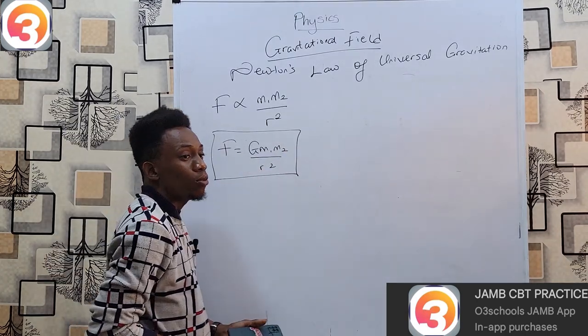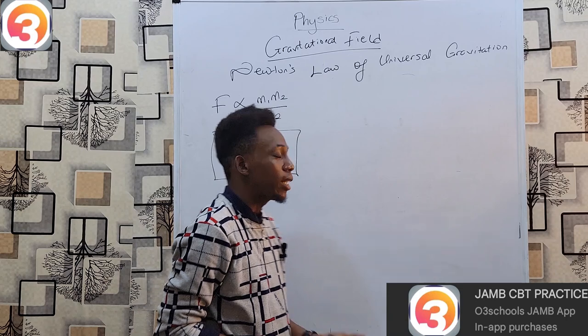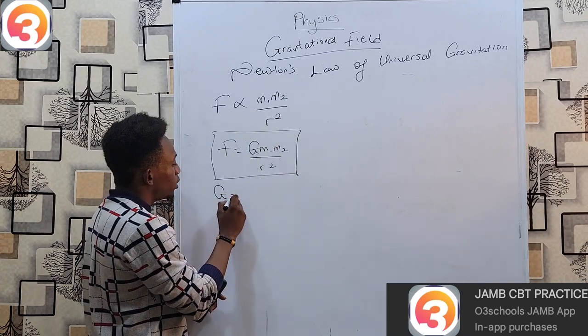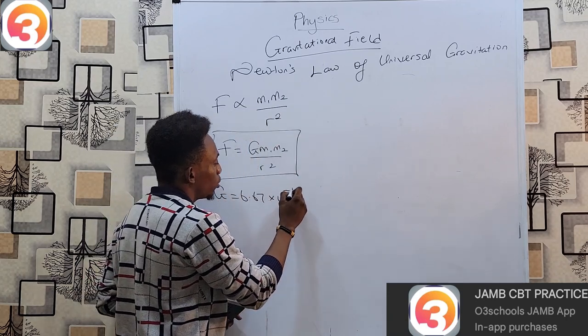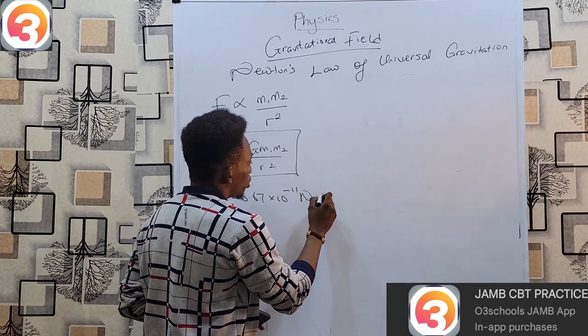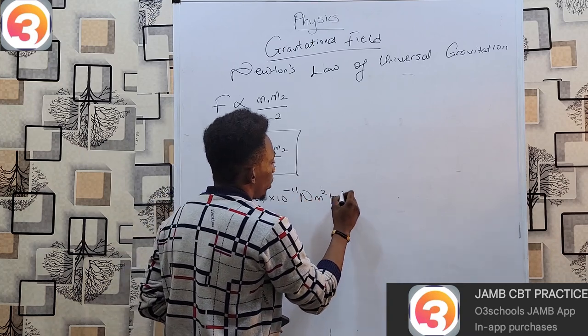Where G is our universal gravitation constant, and the value for this is about 6.67 × 10⁻¹¹ newton meter squared per kilogram squared.